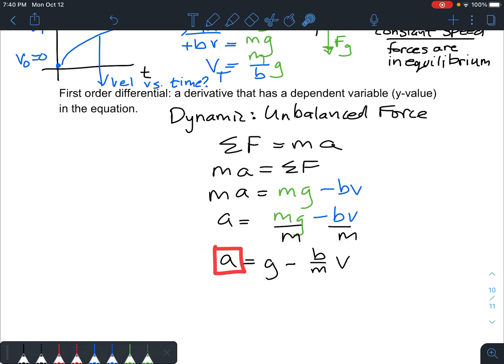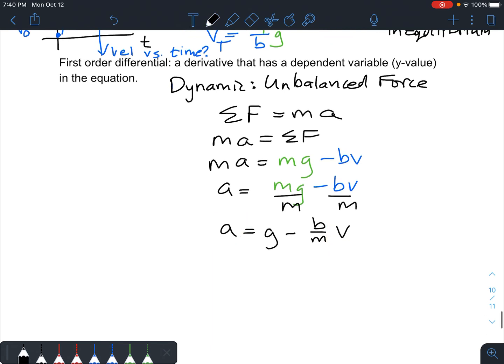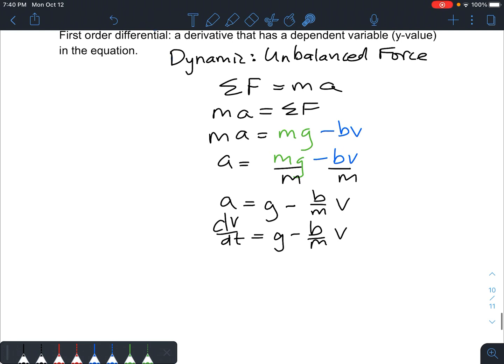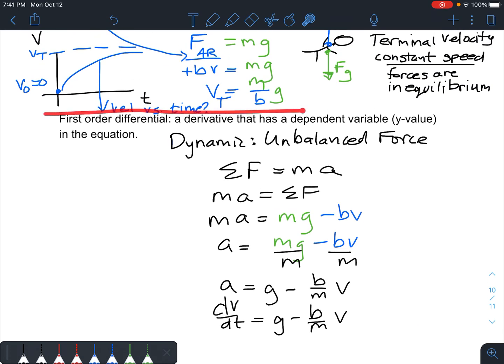Now, something I want to point out here. This is what we call a first-order differential equation. Why? The acceleration is the derivative of velocity with respect to time. However, velocity is inside that equation. So not only do you have a derivative, but the y value of that derivative is inside the equation too. I'm going to call this a first-order differential equation. It's a derivative that has the dependent variable in the equation. This is the dependent variable, v. And these first-order differential equations tend to have a similar setup, tend to have a similar formula, and tend to have a similar graph. So that's always really nice because everything kind of bounces out for you.